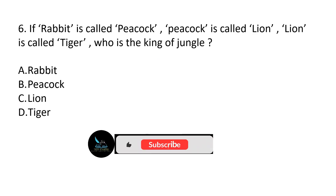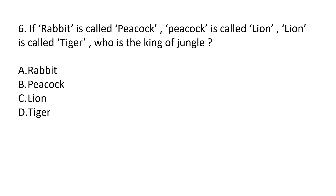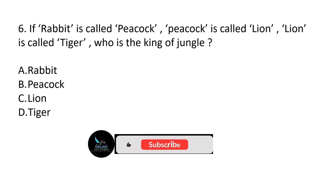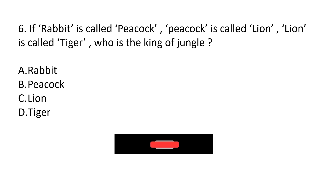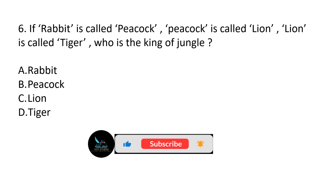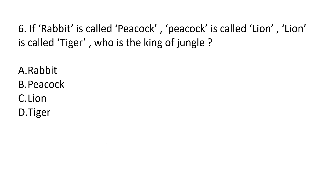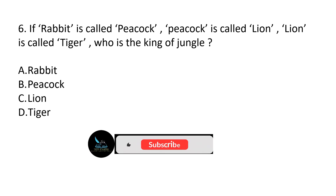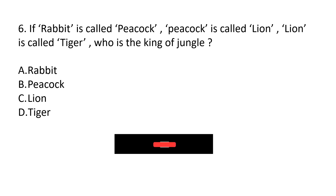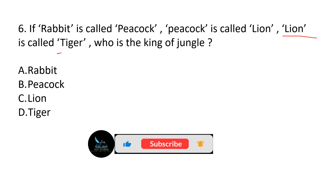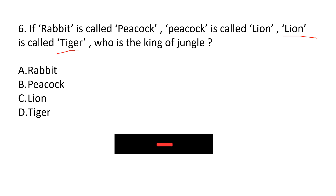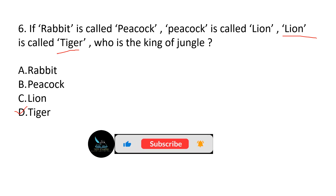Question number 6. If Rabbit is called Peacock, Peacock is called Lion, and Lion is called Tiger — who is the King of the Jungle? Option A: Rabbit, Option B: Peacock, Option C: Lion, Option D: Tiger. The King of the Jungle is Lion. But Lion is called Tiger. So, the answer is Option D — Tiger is the King of the Jungle.